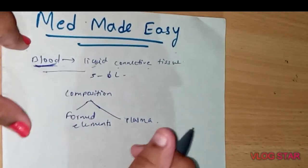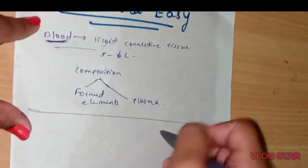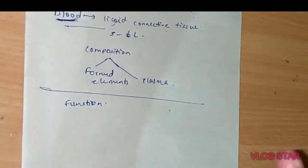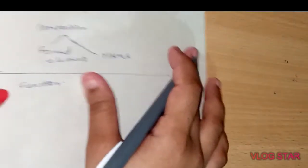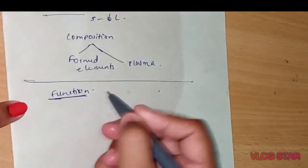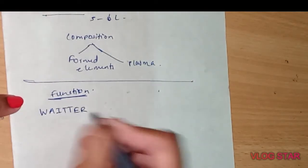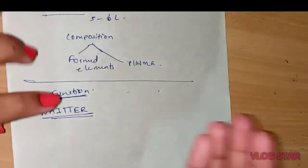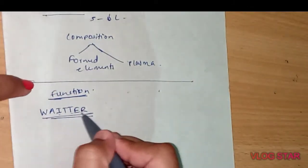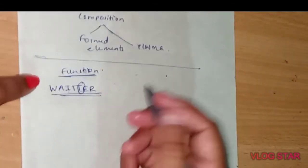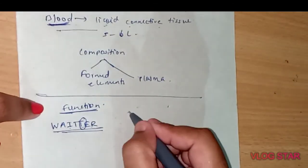These are both components of blood. This is a basic thing you need to write when they ask about blood. Coming to functions of blood, I'll be saying an easy technique to remember all the functions. The technique is WAITTER. Normal waiter spelling is W-A-I-T-E-R, but we are adding another T so we can remember all functions of blood.